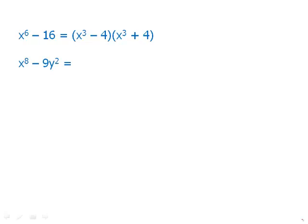For x to the 8th minus 9y squared: x to the 8th is x to the 4th squared, so a equals x to the 4th, and b equals 3y. This factors into x to the 4th plus 3y times x to the 4th minus 3y.